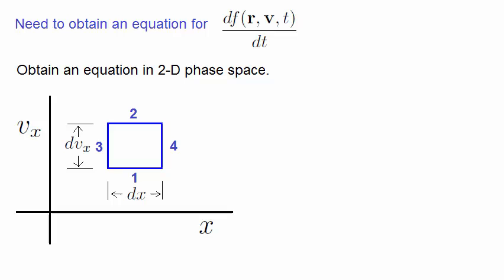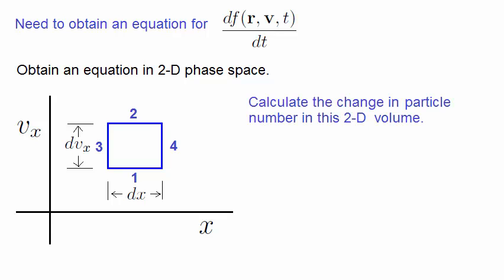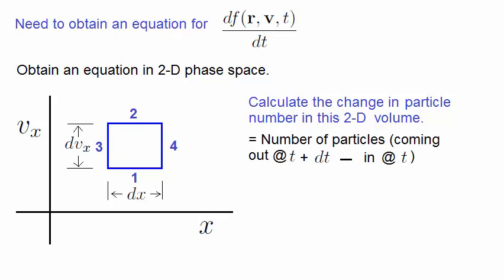We'd like to calculate the change in particle number in this two-dimensional volume. We can do it by measuring the particles coming out and subtracting them from the particles coming in. The change in the number of particles in this two-dimensional volume is given by the number of particles coming out at time t plus dt minus the number of particles going in at time t.